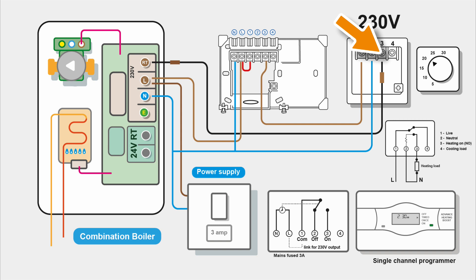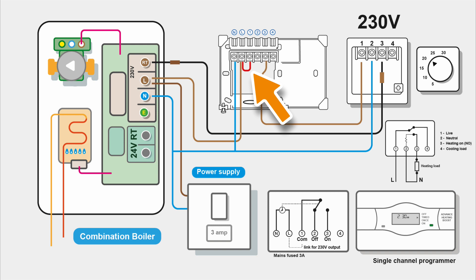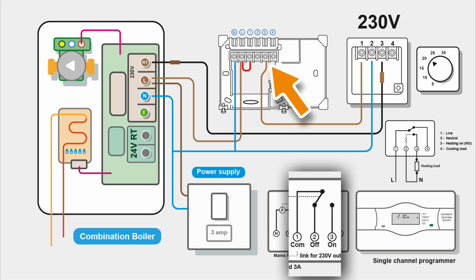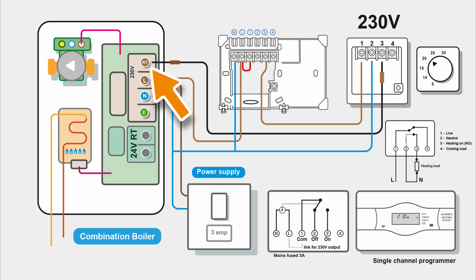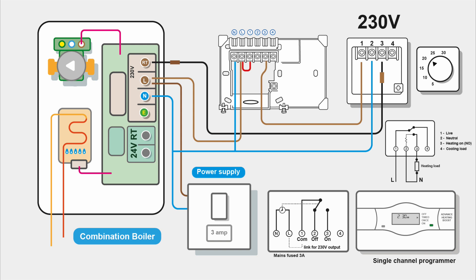If the thermostat wants heat it sends the switch live out on three into the room thermostat connection and the boiler starts up. The link between L and one is important - without it there's no voltage on those terminals; they're voltage free until we put some voltage onto them. This is a 230V thermostat so we need 230V switching to the boiler - but that's not always the case. This boiler might want to be switched on by 24V connections, so we must be careful not to put 230V onto an extra-low-voltage connection.